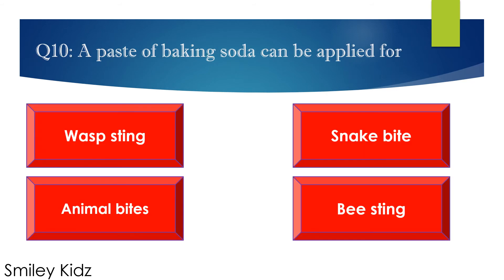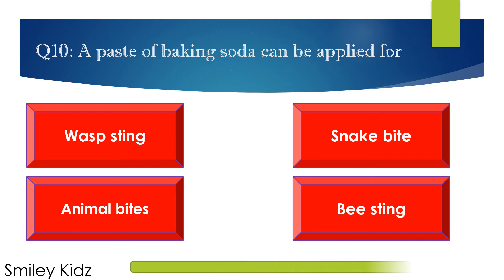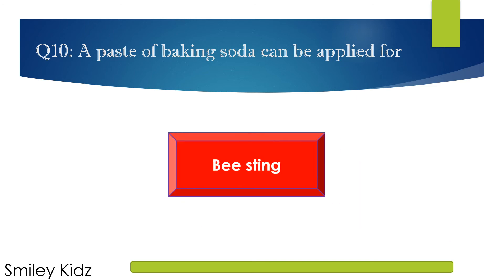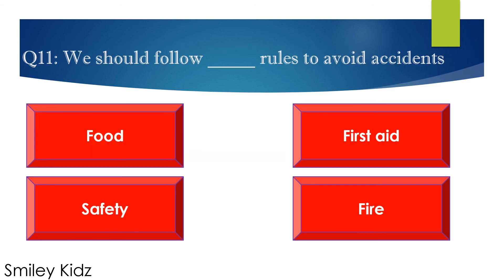Question number 10. A paste of baking soda can be applied for? Options are A. Wasp sting, B. Snake bite, C. Animal bites, and D. Bee sting. Your time starts now. Your time is up. The right answer is bee sting. A paste of baking soda can be applied for a bee sting.